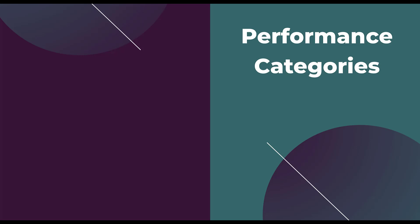Anytime that you're analyzing performance for keywords, they're really going to fit into a few different categories. They're either going to be profitable, not profitable, or unclear or borderline. This covers pretty much soup to nuts all the different ways that keywords can perform. And depending on how each keyword is doing and which category it falls in, there are different actions for you to take.